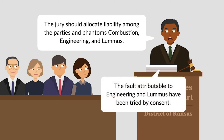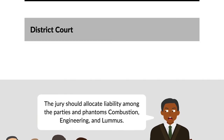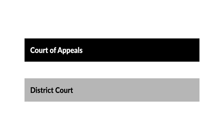The District Court ruled that the fault attributable to Engineering and Loomis had been tried by consent. The jury allocated fault among Hardin, Columbus, Combustion, Engineering, and Loomis, but found that Forsyth wasn't at fault. Hardin appealed to the Tenth Circuit.